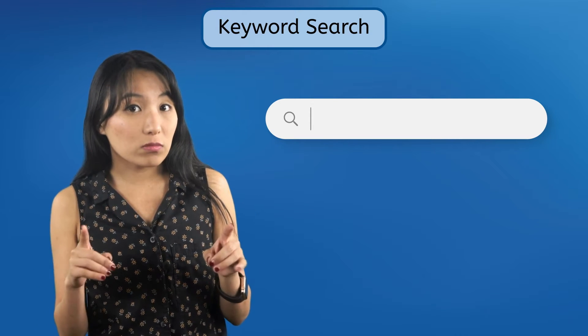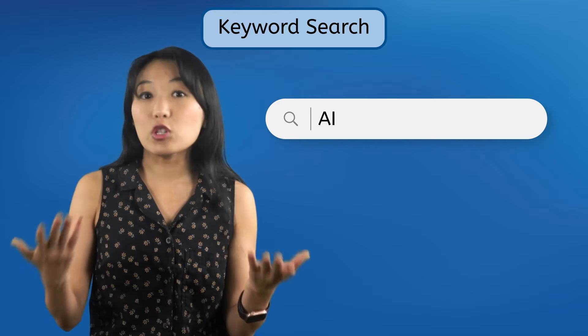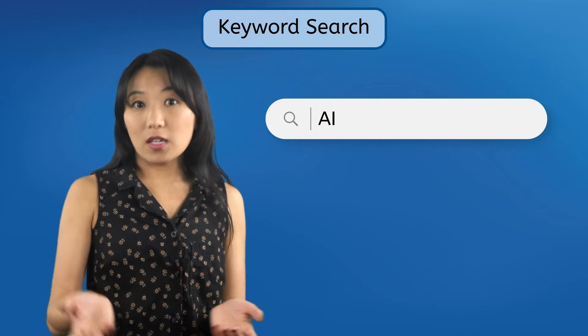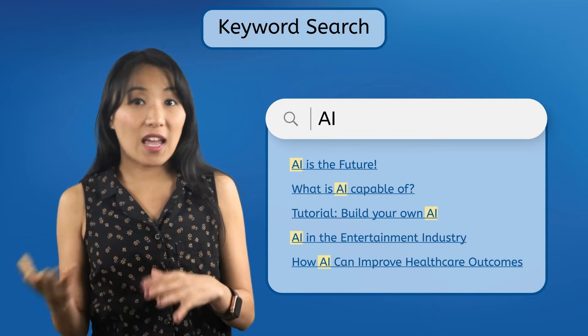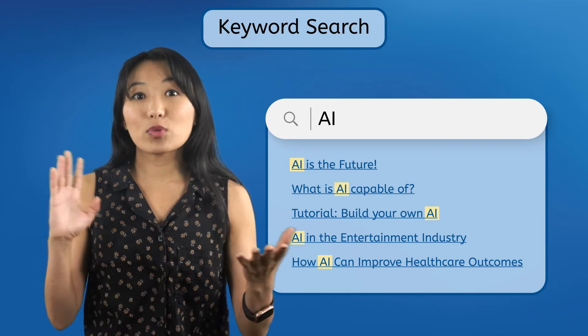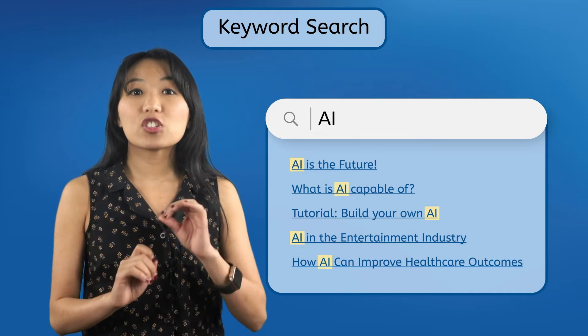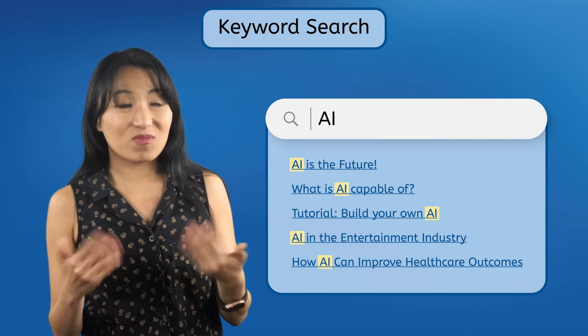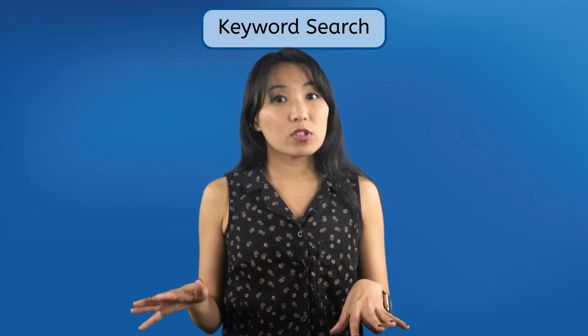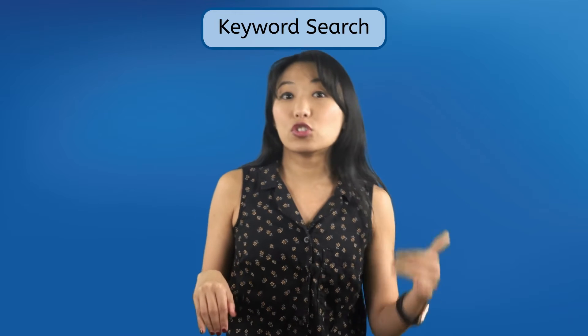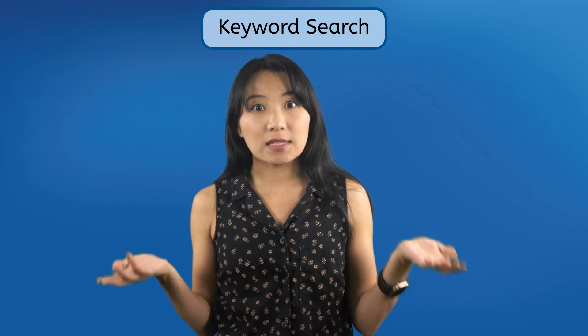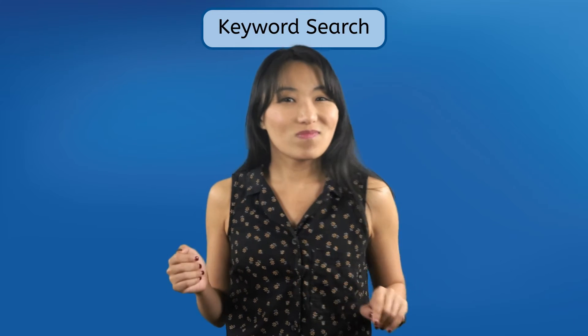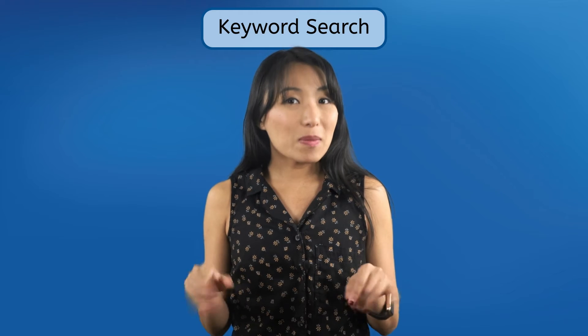Ironically, keyword searches also have the opposite problem — they only search for the words you entered, not for related terms. If you wanted to read about new advances in AI technology, you might just type in AI, but the results would only include pages with the phrase AI on them. Articles like "artificial intelligence driving cars" or "can machine learning be used to cook" won't show up in your results, because they don't say AI, and you might miss out on valuable information. So keyword searches include results you don't want, and don't always include results you do want. Great, sounds super helpful, right? But there's a trick to it — keyword searching may be the default, but it's not the only way to search. Let's learn about some techniques to improve your search results.